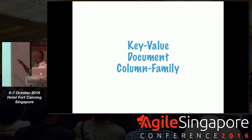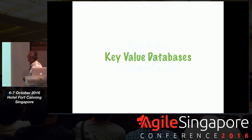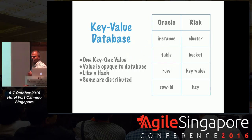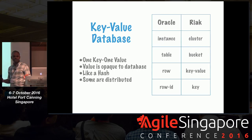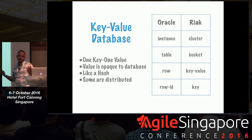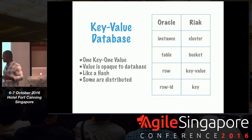Most NoSQL databases can be segregated into three major categories: key-value, document, and column family. Let's take key-value databases. If you're a programmer, a hash is essentially a key-value database — it has a key and a value. The database doesn't know or care what's inside the value. Memcached is just on one machine with a key and a value, but Riak has a key and value that you can distribute on multiple machines.